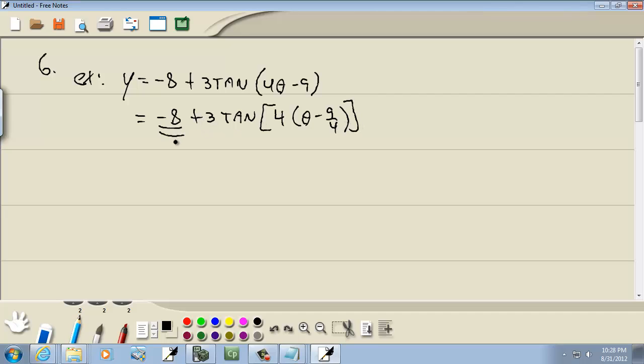Okay, now this right here, negative 8, this is going to say we're going to shift it down 8. This negative 9 fourths in here, this is where it shifts left to right opposite what you think. It's negative 9 fourths, which would make us think left 9 fourths, so we're really going to go right 9 fourths.